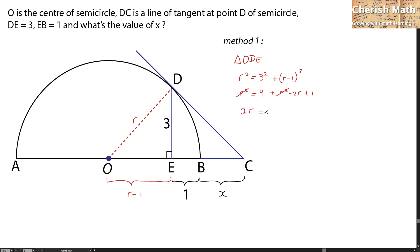2R will be 9 plus 1 is 10, and the value of R is 5 units. So this is going to be 5 units, and for this part it's going to be 4 units for the length of OE.